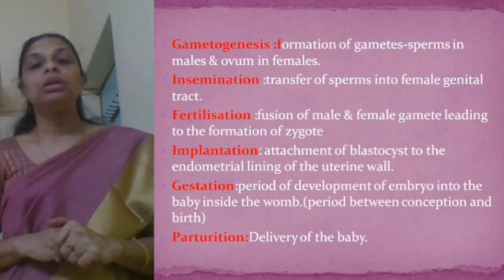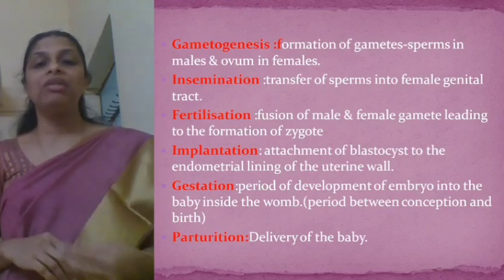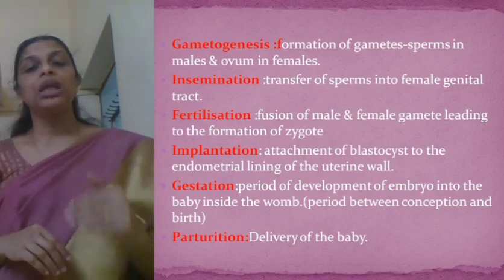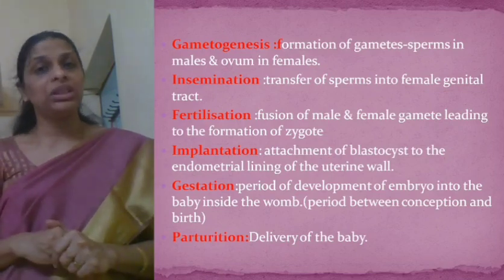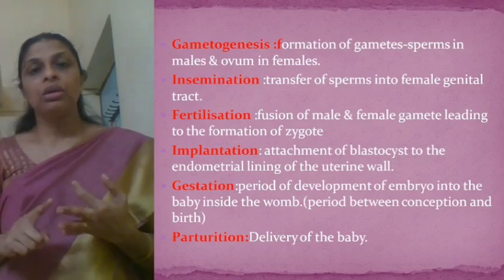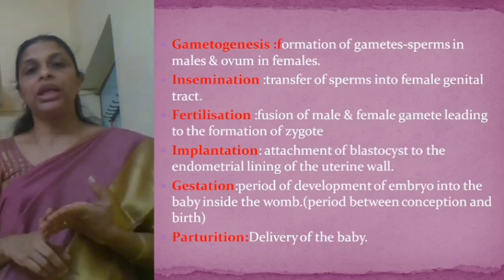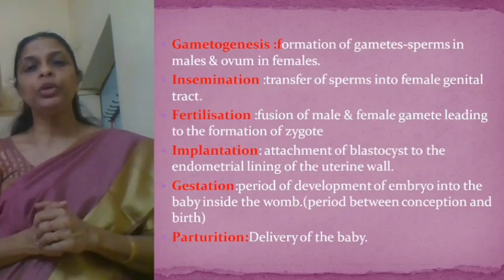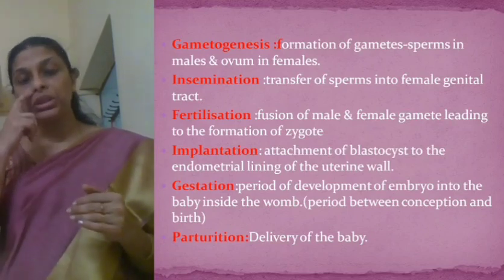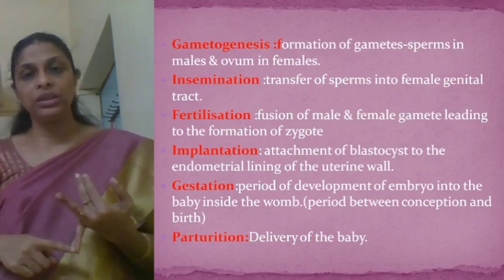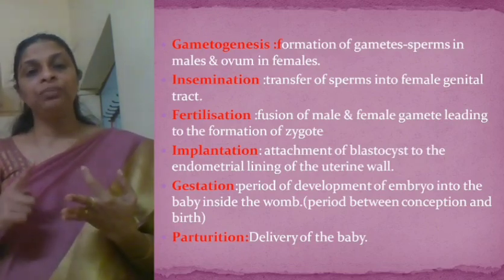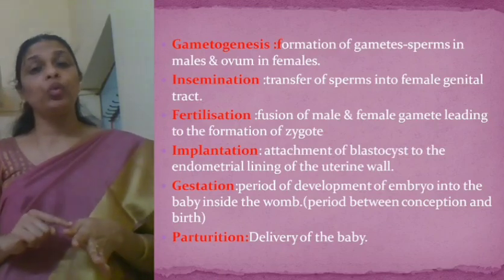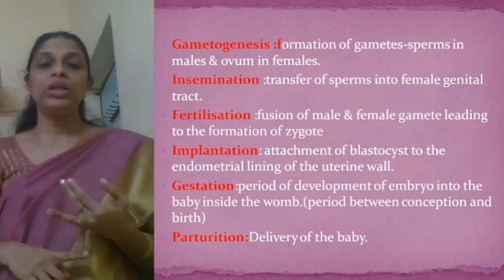Parturition means the process of delivery of the baby. So to summarize, the different events in human reproduction are: gametogenesis, insemination, fertilization, implantation, gestation, and finally parturition.